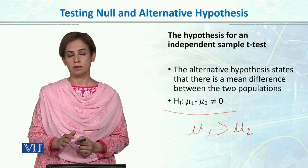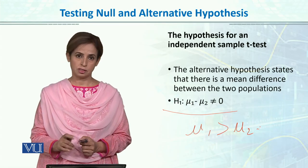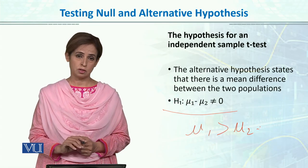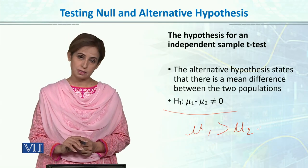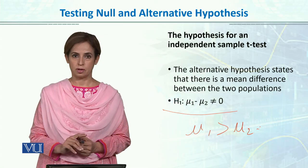So the first step for applying the independent sample t-test is that you construct your null hypothesis and alternative hypothesis.